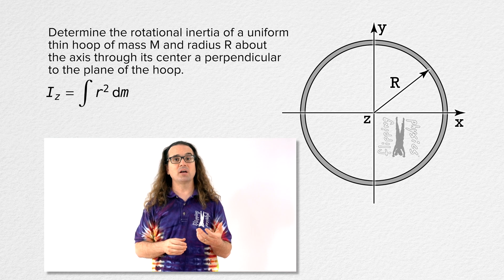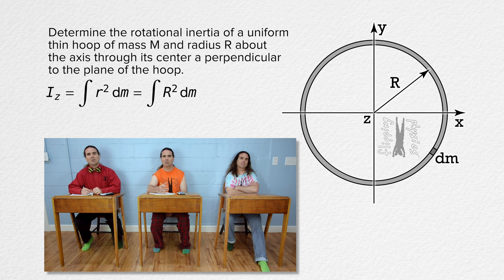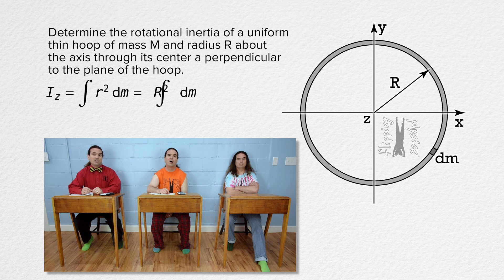How do we take the integral of the square of the distance each particle is from the axis of rotation with respect to mass? Let's add a representative dm to the figure. Actually, every piece of dm of the uniform thin hoop is located the same distance, capital R, from the axis of rotation. So we can replace the variable lowercase r with the constant capital R, the radius of the uniform thin hoop. And capital R is constant, which means we can take it out from under the integral. The integral of dm is just capital M, the mass of the whole uniform thin hoop.